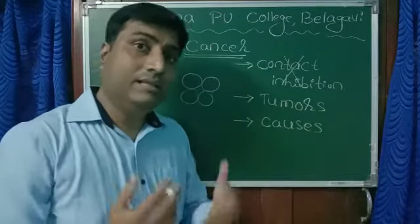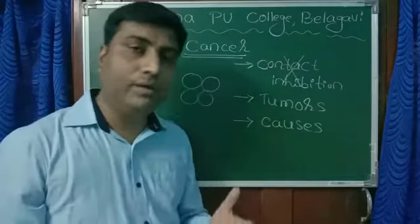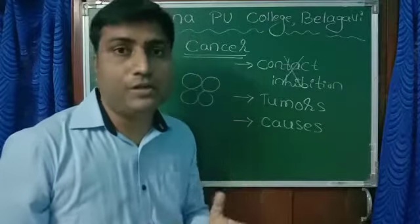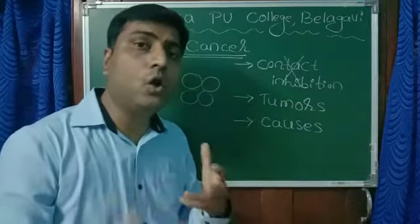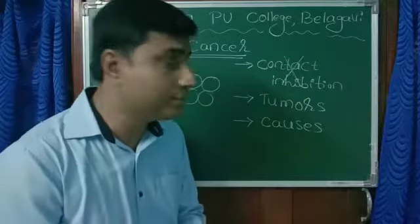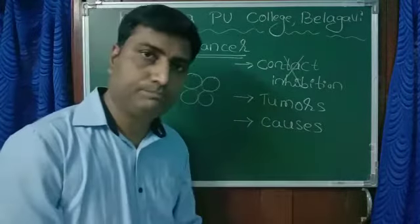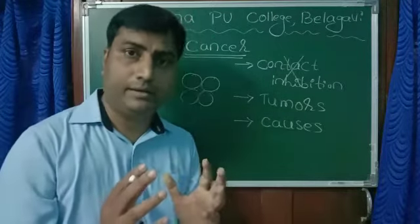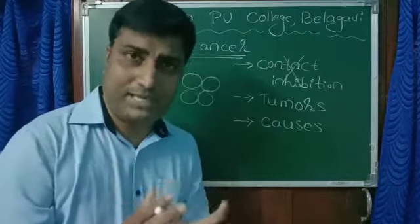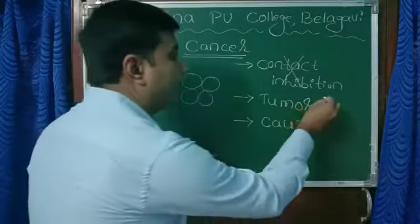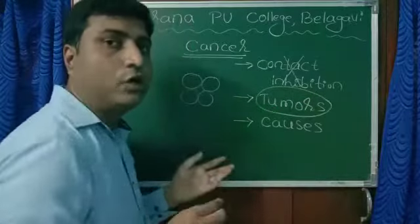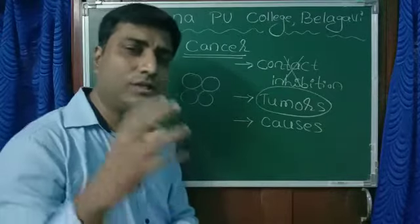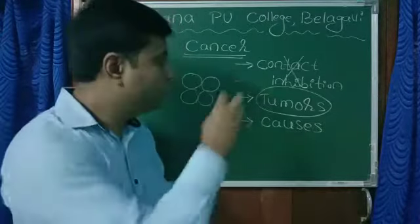When the number of cells increases uncontrollably, the cells start competing with each other. The normal cells which have to function will now starve — they undergo starvation — and that leads to many complications, which we call cancer. Also, when cells divide and the number increases, they may group together to form a mass of cells, and we call them tumors.